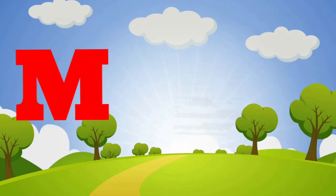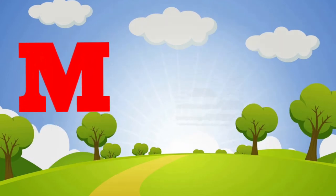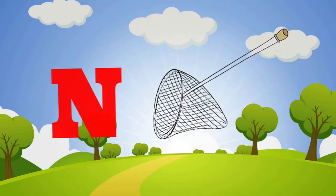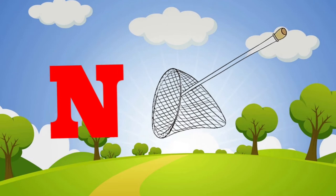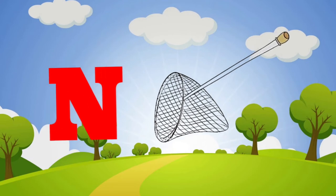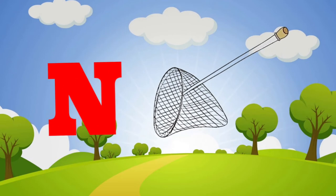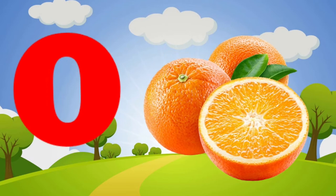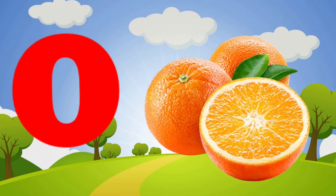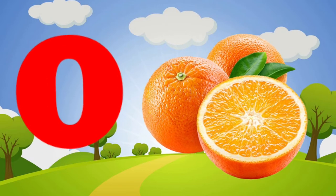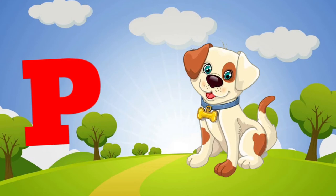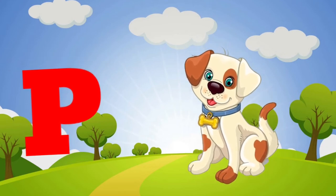M is for mat, m-m-mat. N is for net, n-n-net. O is for orange, o-o-orange. P is for pet, p-p-pet.